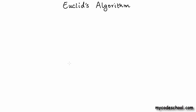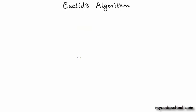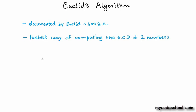Hi everybody. In this video we'll look at a short but very beautiful algorithm known as Euclid's algorithm. The algorithm is named after Greek mathematician Euclid. We're not sure who invented it but it was first documented by Euclid back in 300 BC in his book called Elements. This algorithm is more than 2000 years old and the reason we still use it is because it is the fastest way to compute the GCD of two numbers.